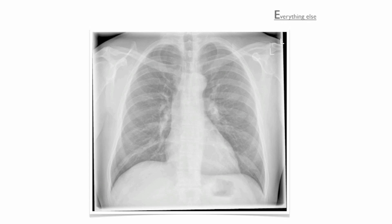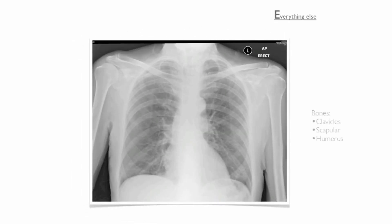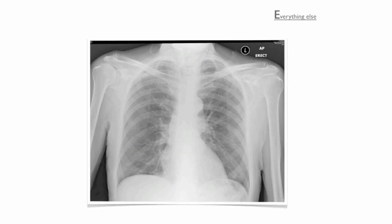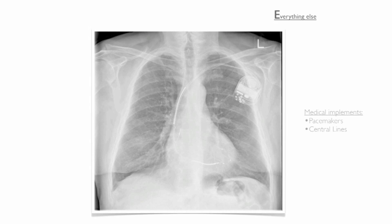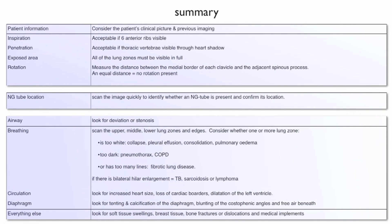Finally, we review everything else, starting with soft tissues. Look for swelling, surgical emphysema and breast shadows. Next, look at the bones for any fractures or dislocations — look at the clavicles, the scapula, and both humerus. Trace the outline of each individual rib. Finally, look for medical implements such as pacemakers and central lines. This concludes our review of the Piper N-ABCDE mnemonic. We've covered an awful lot of material, so here is a summary for you to pause and print.